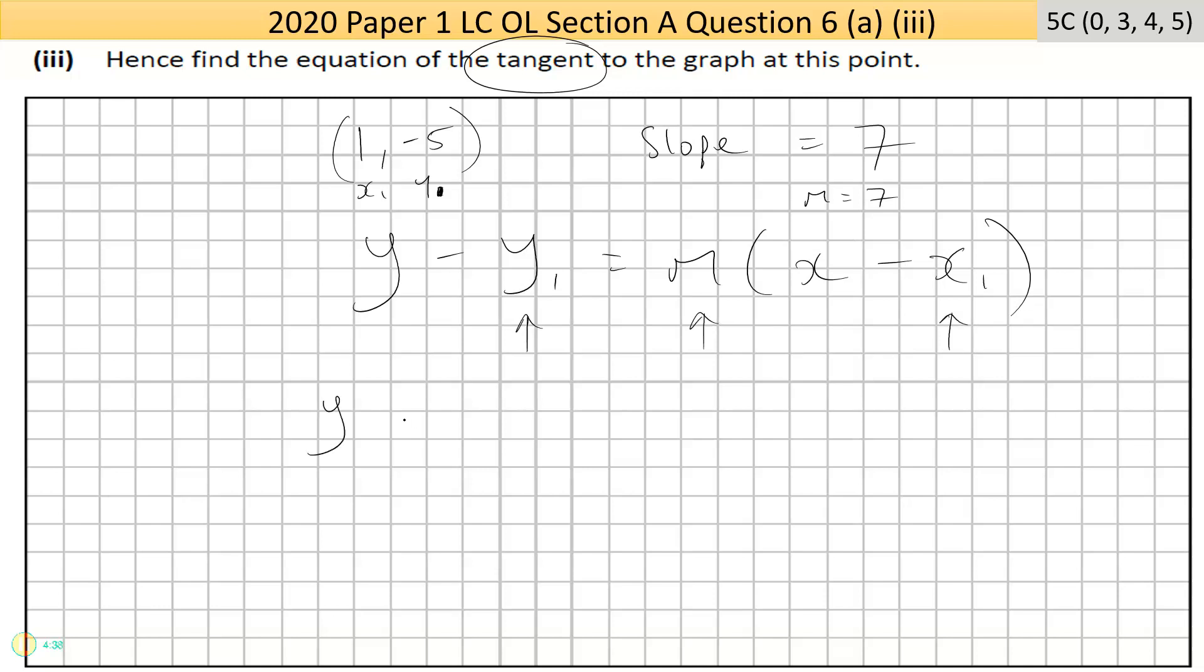These three things get substituted. Once you do that, you're pretty much there. So it's y - (-5), that's the y value up here, equals 7 (the m we got from the previous part), and the x₁ value was 1. At that stage you should do pretty well, but you should go left to right and remove brackets.